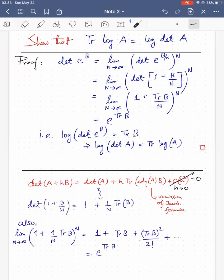The way this proof proceeds is that we write the determinant of e to the power B, which is equal to determinant of e to the power B by N raised to the power N, and we take the limit N to infinity.